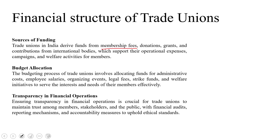There are clear restrictions on donations. Unions might also receive government grants for specific purposes, like conducting worker education programs. When looking at budget allocation, the budgeting process involves allocating funds for administrative costs, employee salaries, organizing events, legal fees, and strike funds.